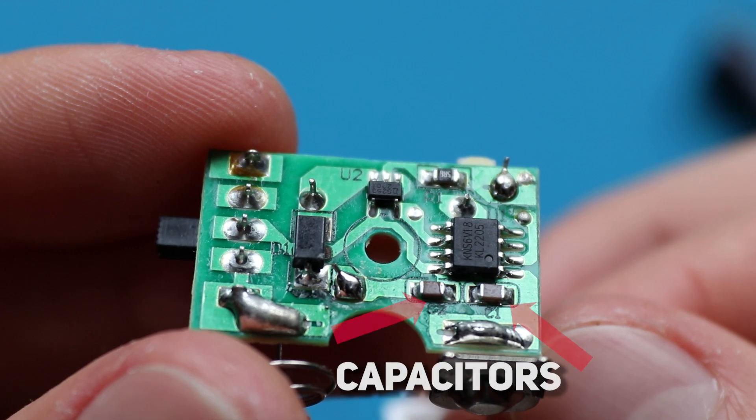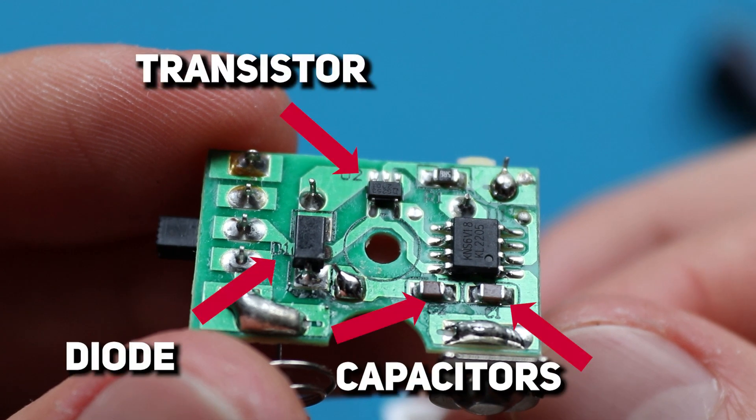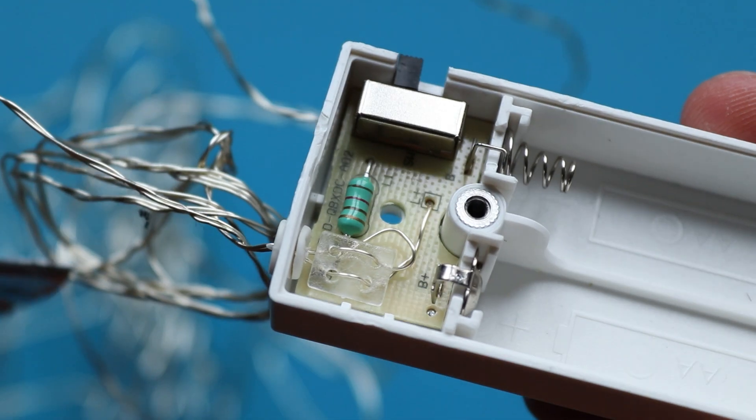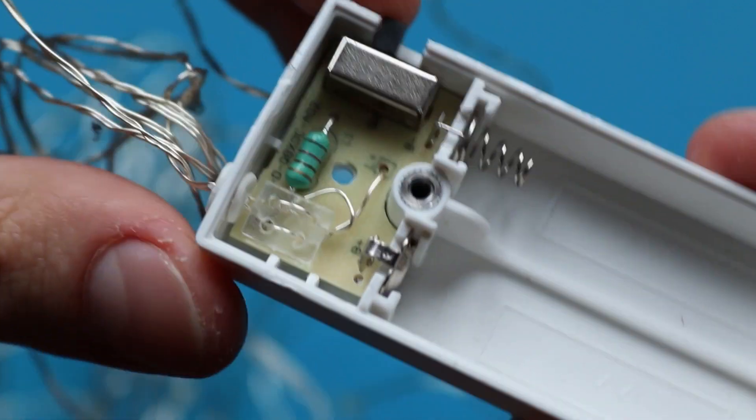Other components on the PCB are capacitors. That is definitely a diode. This is probably a transistor, resistor, and this should be a control circuit. And from the other side there is an inductor.